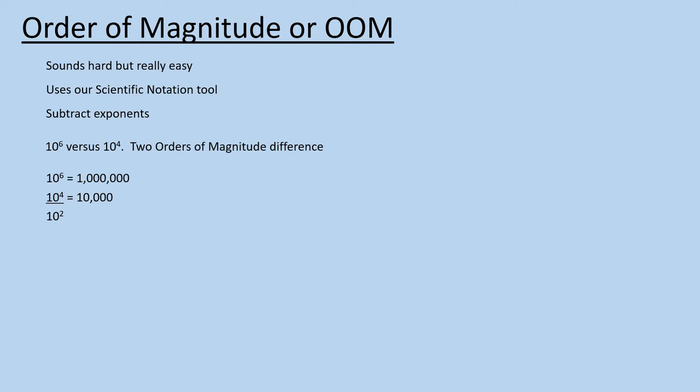The example below details two orders of magnitude. 10 to the 6th is 1 million, while 10 to the 4th is 10,000. Subtracting the exponents, we get two. Two orders of magnitude, or 10 squared. 10,000 times 10 squared is a million.